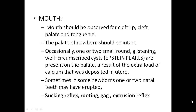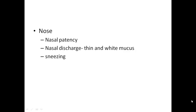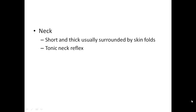Mouth should be observed for cleft lip, cleft palate, and tongue tie. The palate of newborns should be intact. Occasionally, one or two small round glistening well-circumscribed cysts known as Epstein pearls may be seen on the palate, resulting from extra calcium deposited in utero. Sometimes, one or two natal teeth may have erupted. Sucking, rooting, gag, and extrusion reflexes can be elicited. Nose: assess nasal patency and nasal discharge, which should be white and thin mucus. Neck is short and thick, usually surrounded by skin folds; the tonic neck reflex can be elicited.